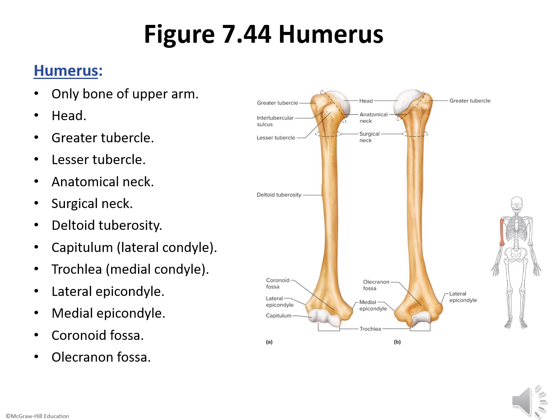The narrow depression along the lower margin of the head that separates it from the tubercles is called the anatomical neck. Just below the head and the tubercles of the humerus is a tapering region called the surgical neck, so named because fractures commonly occur there. Near the middle of the bony shaft on the lateral side is a rough V-shaped area called the deltoid tuberosity, which provides an attachment for the deltoid muscle that raises the upper limb horizontally to the side.